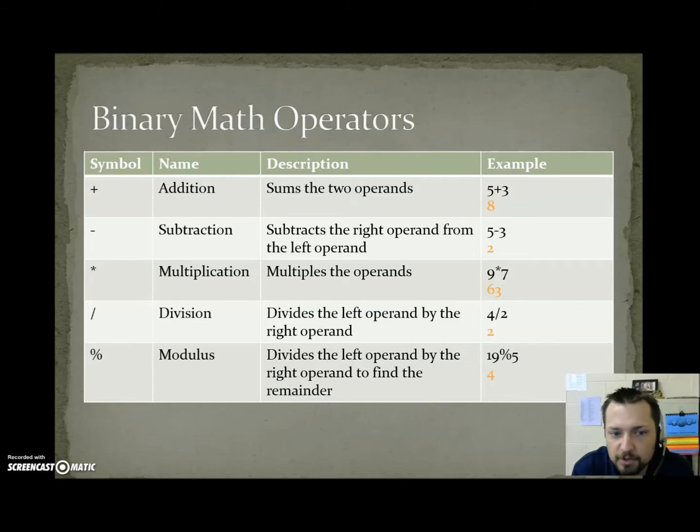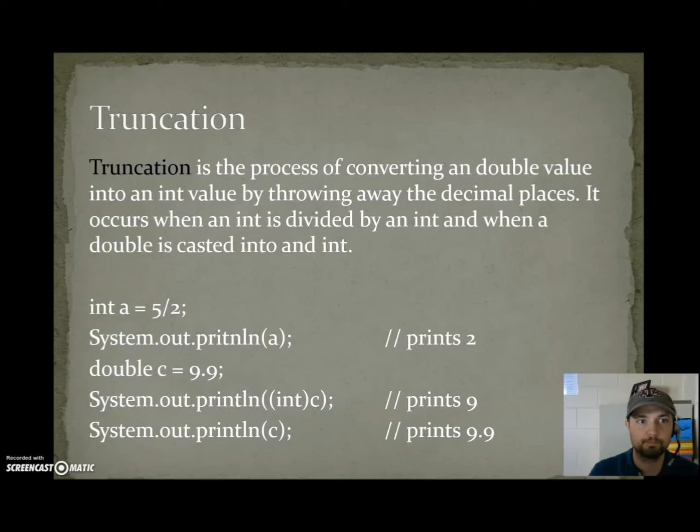Percent is used for modulus, also known as remainder. It divides the left operand by the right operand to find the remainder. 19 divided by 5 is 3, but what we care about here is the remainder.